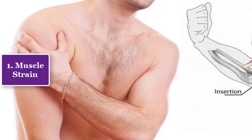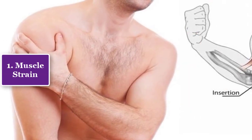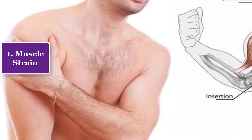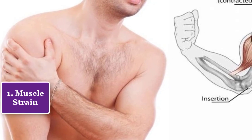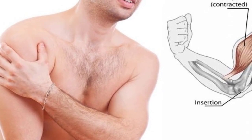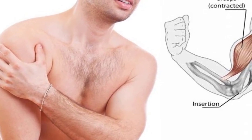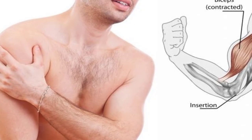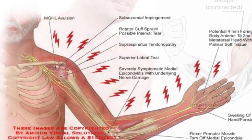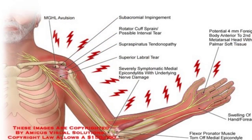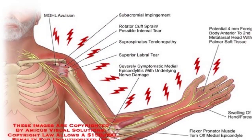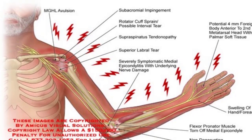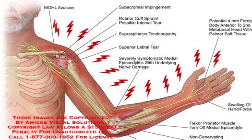1. Muscle strain. Muscle strain is a likely cause of upper arm muscle ache. This injury occurs when a muscle is overstretched. Muscle strains range in severity — there may be very little muscle tissue damage, or there may be tearing of the muscle fibers.